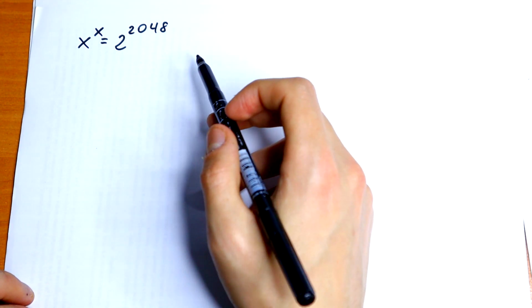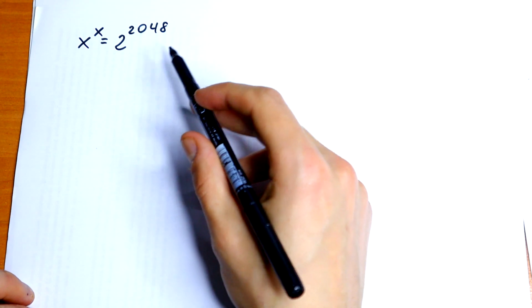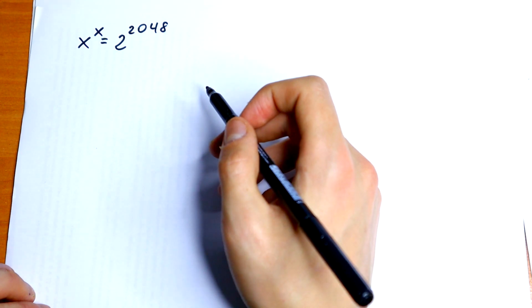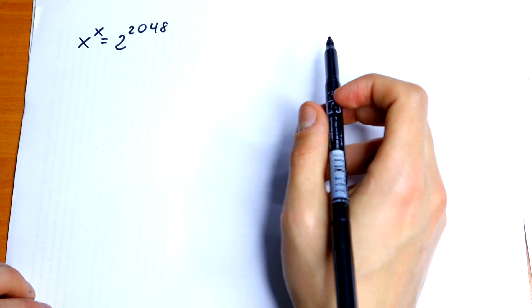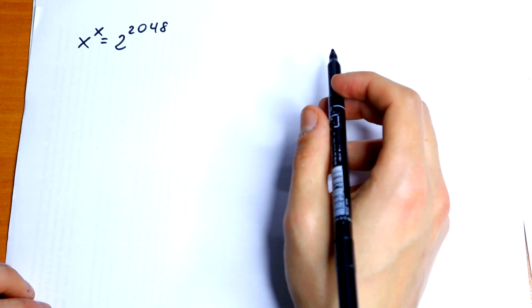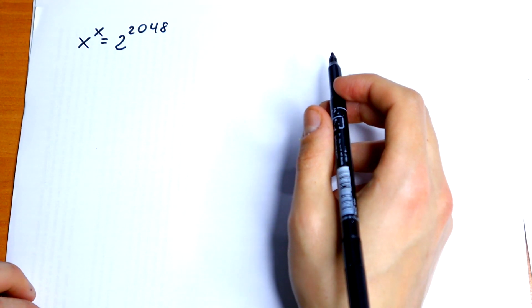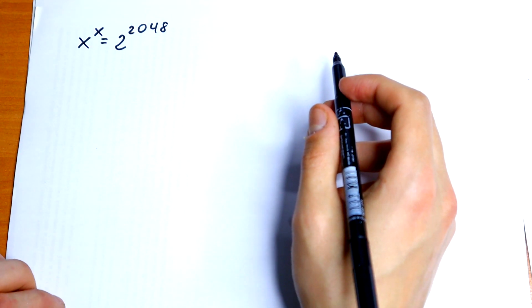So we have x to the power x equal to 2 to the power 2048. How can we solve this? For sure we can use a log, I guess, but I want to suggest you one interesting method. If you agree with this, if you disagree with this, write your suggestion in a comment.